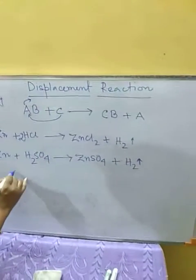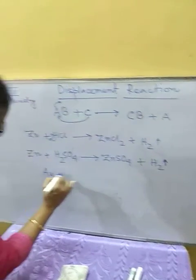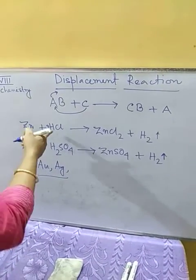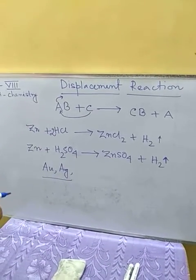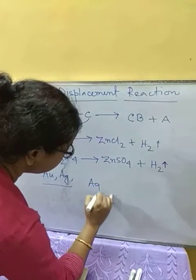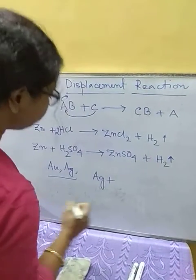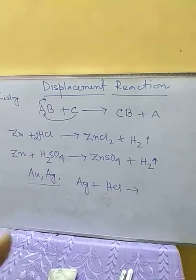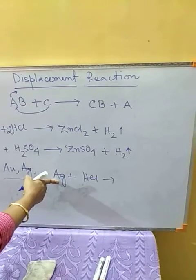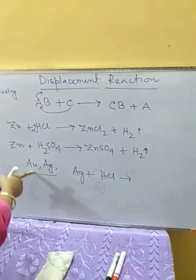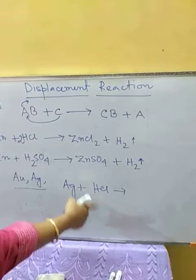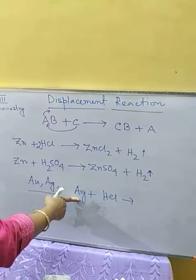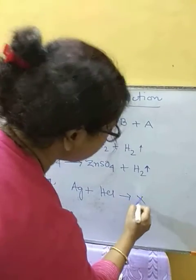However, copper, gold, and silver are less reactive than hydrogen. So if we try to react silver with HCl, it cannot remove hydrogen. Gold similarly cannot displace hydrogen, since hydrogen is more reactive than silver or gold. Therefore, this reaction will not occur.